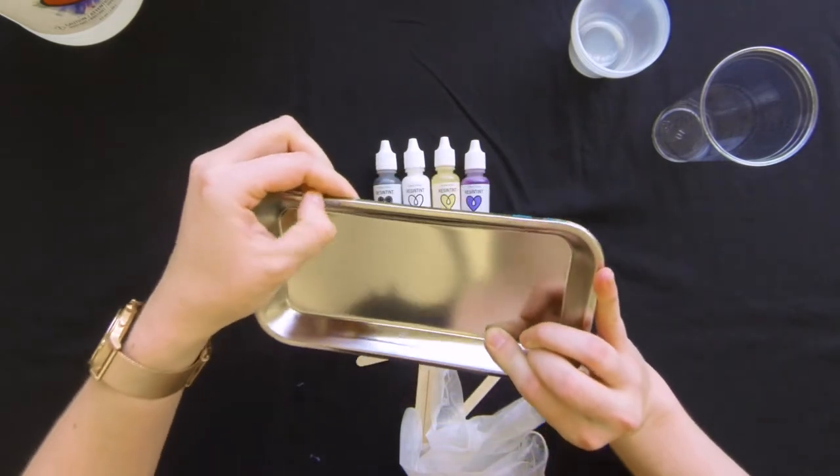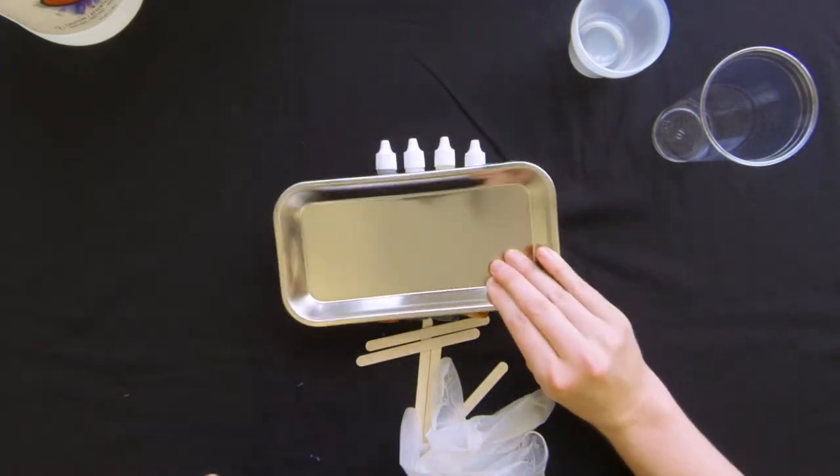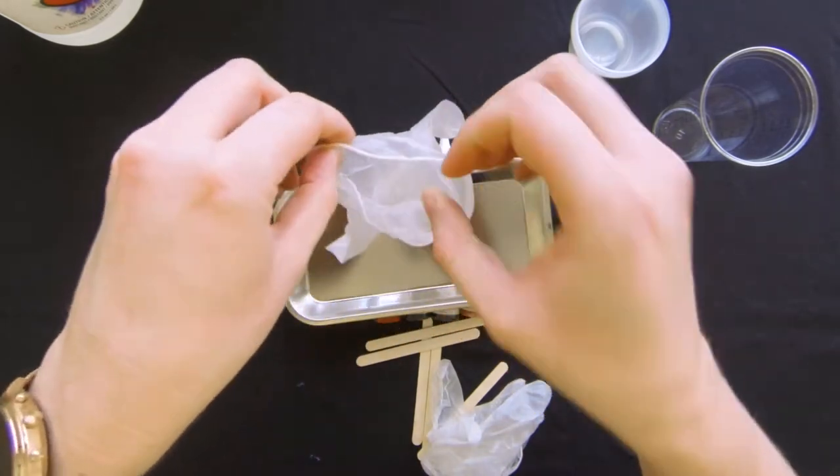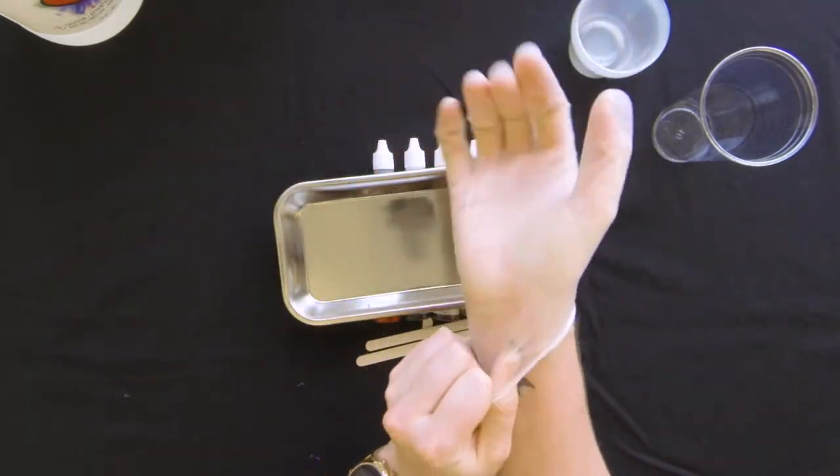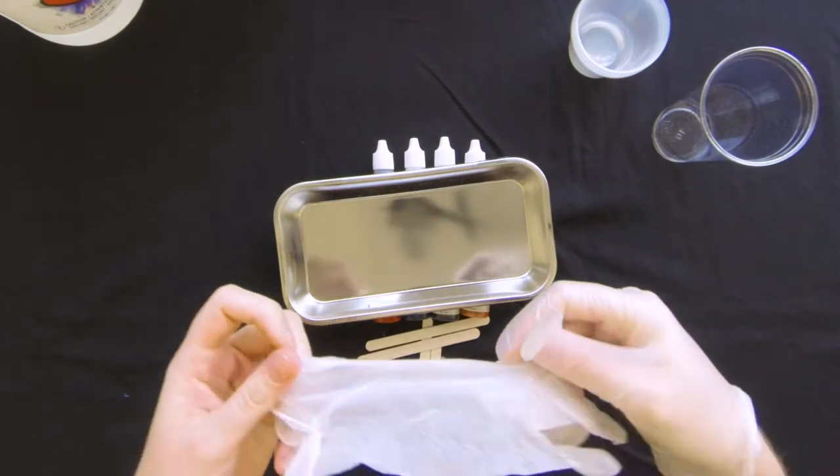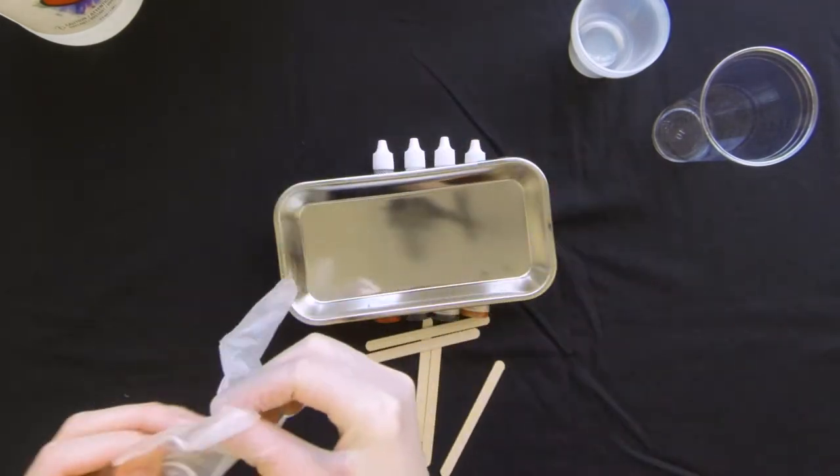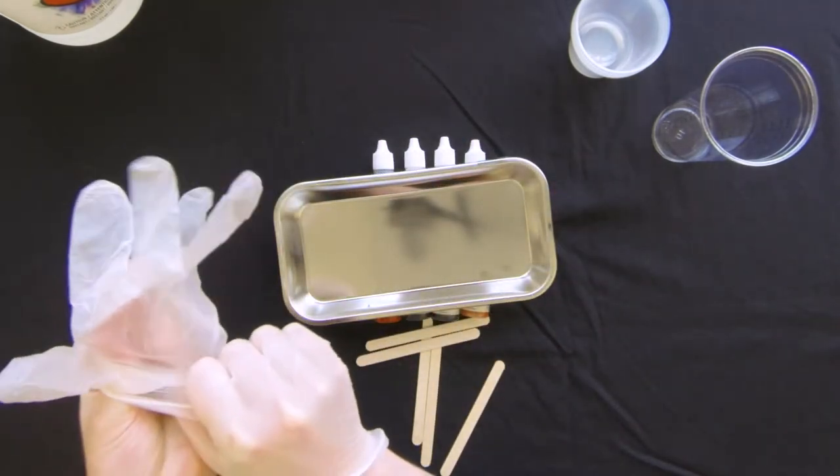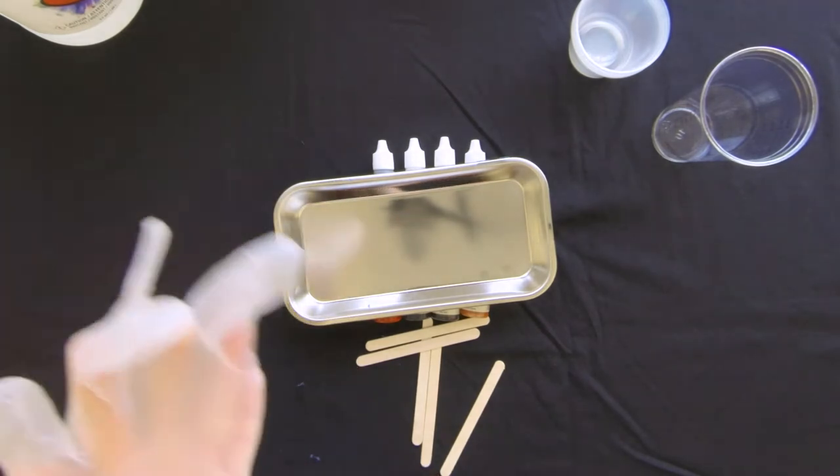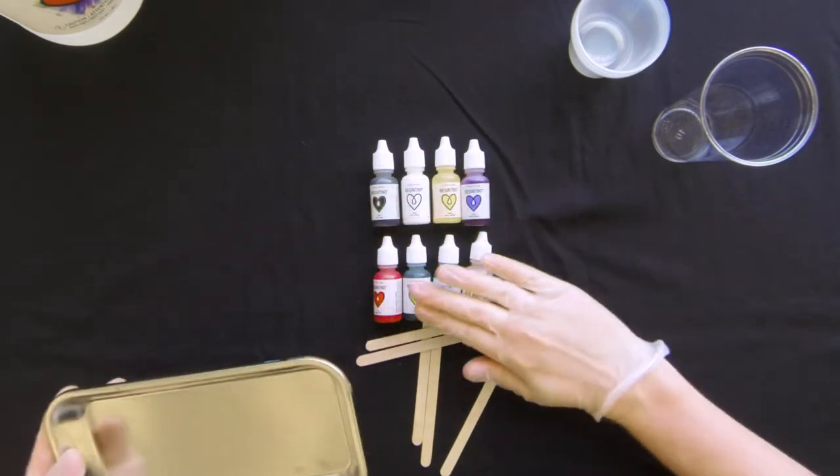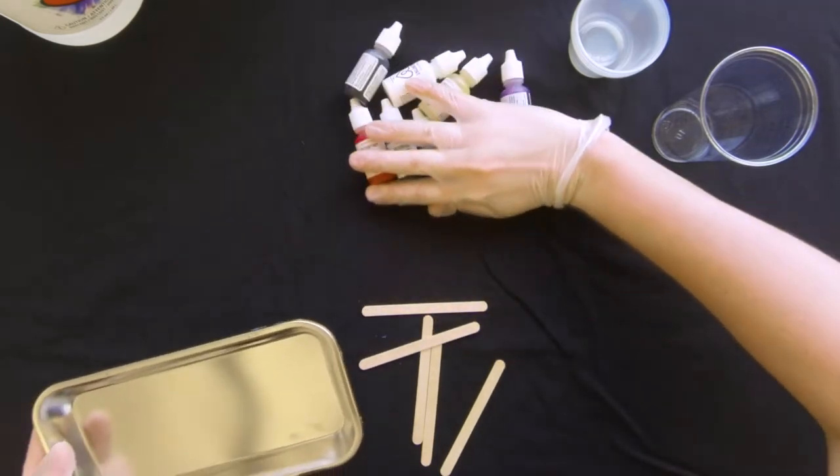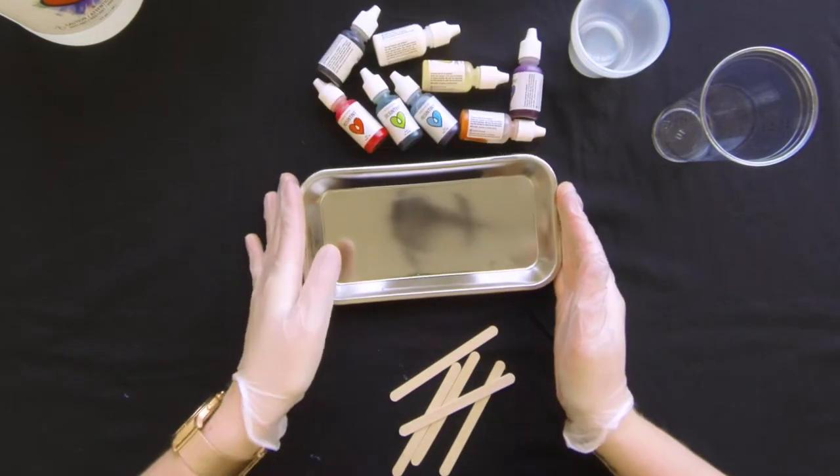We want to make sure we put on our gloves so the resin can damage your skin if you get it on there. So we're going to make sure we're being safe and protected. All right, I have all my colors here. I'm going to push those aside and have our tray right here in the middle.